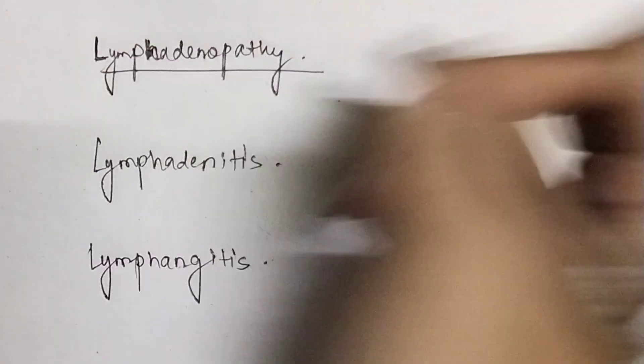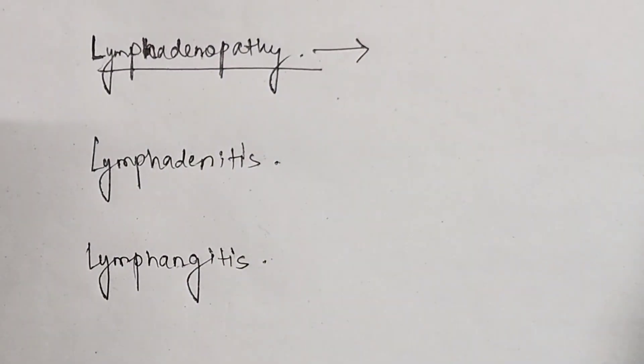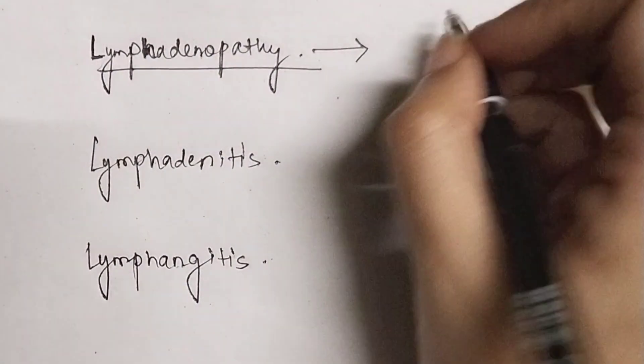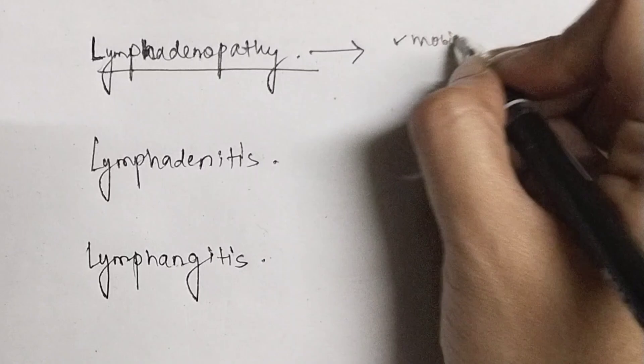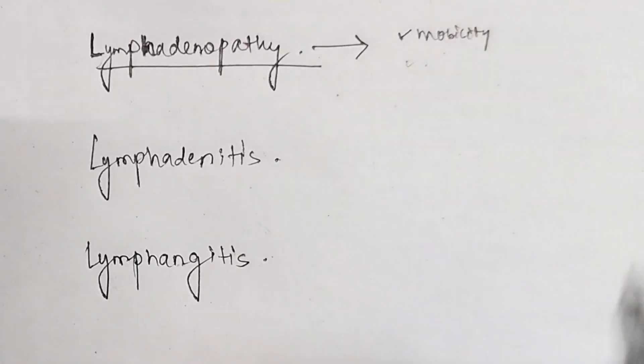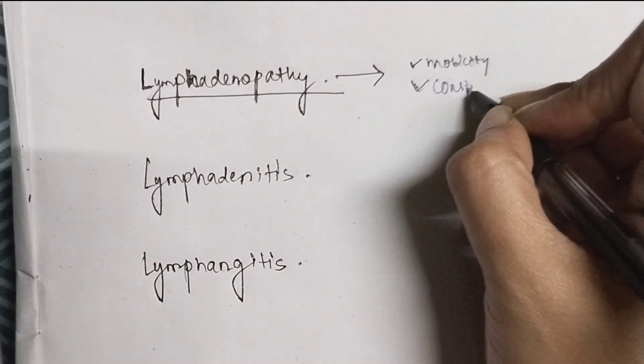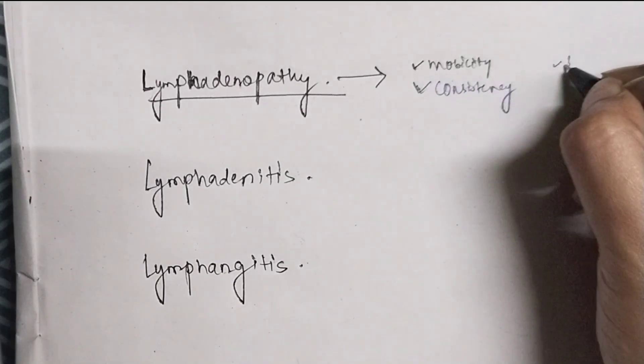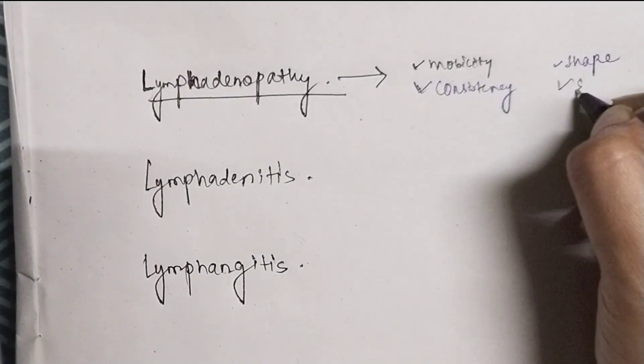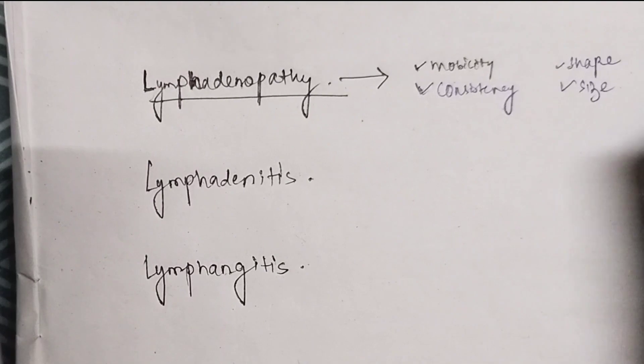What is lymphadenopathy? That is already explained in a video which means that if there is a change in the mobility, consistency, change in the shape, change in the size of lymph nodes, that is called lymphadenopathy.